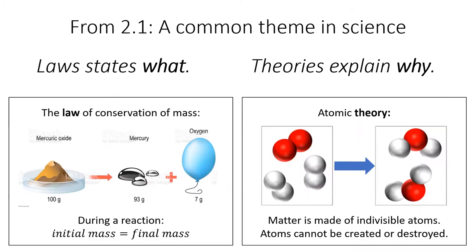Recall from section 2.1 the difference between a scientific theory and a scientific law. A law describes a universal truth, and it describes it mathematically. However, a law does not explain why that truth is so truthy. That is the job of a theory. For example, atomic theory explains why masses don't change during a chemical reaction come from the rearrangement of indivisible and indestructible atoms.